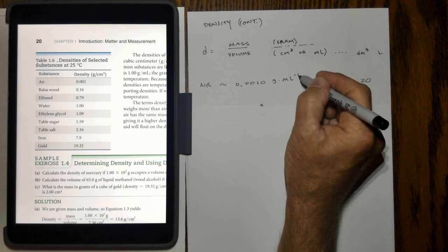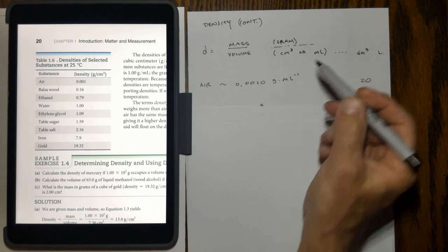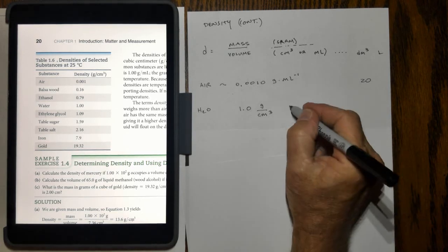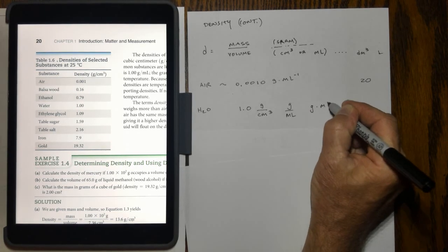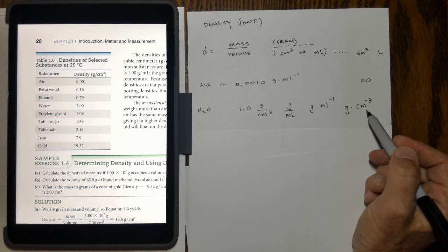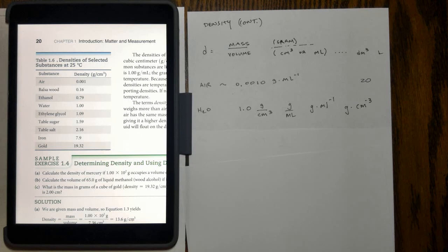Notice how I wrote it: gram times milliliter to the negative one. If you don't remember from your math class, any time you have a negative exponent, that actually means it should be divided by this amount, so gram divided by milliliter. This is just a tricky way to write this. Another example is water, which has a density of approximately one gram per cubic centimeter, or gram per milliliter, or grams times milliliter to the negative one, or grams times centimeter to the negative three. Any one of those types of units are fair game. Iron is much more dense than water, and things that are more dense would sink in mixture with one another. That's why if you threw a chunk of iron into water, it would sink to the bottom. Same thing with gold.